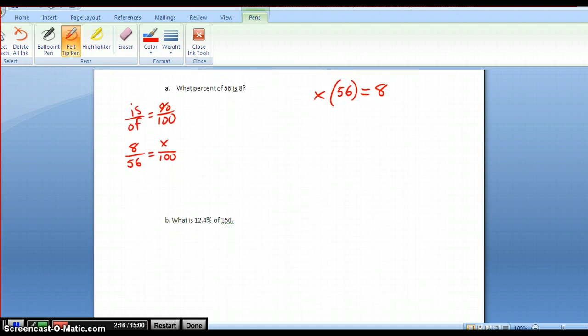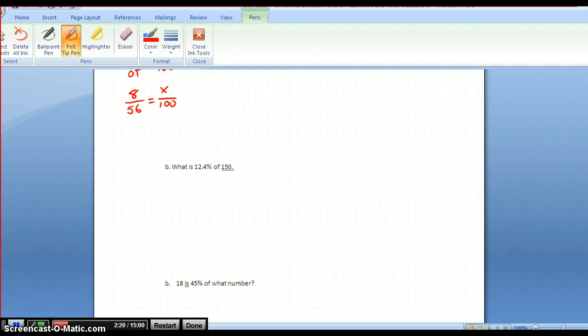The next example: what is 12.4% of 150? I start with my is and my of. What is—I don't know what is. The of is 150, and then I have my percent over 100, in this case 12.4 over 100. Again, cross multiply and solve.